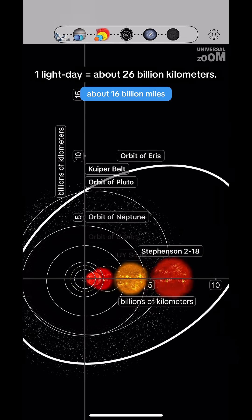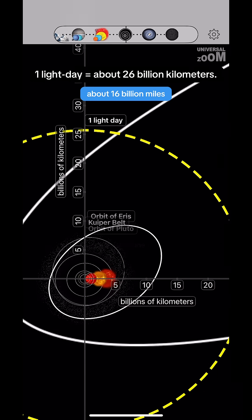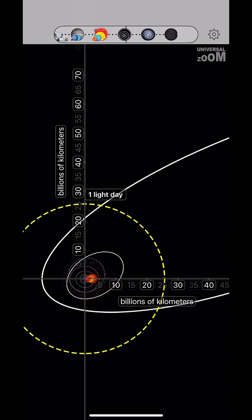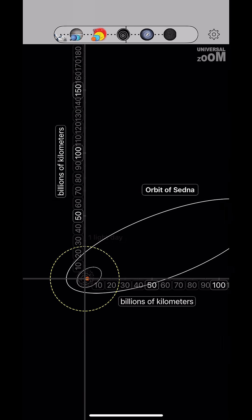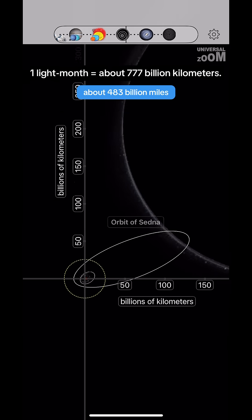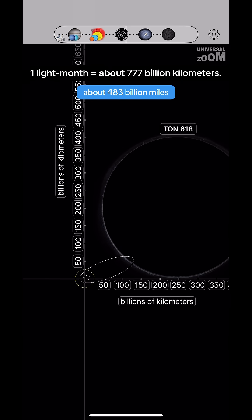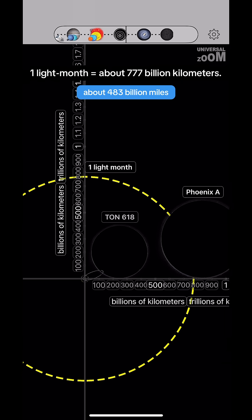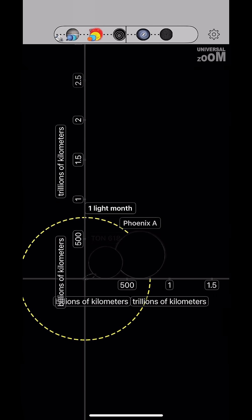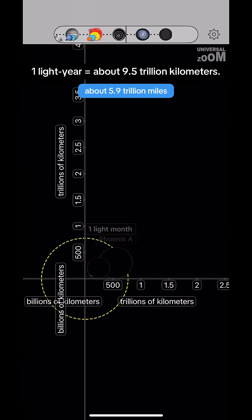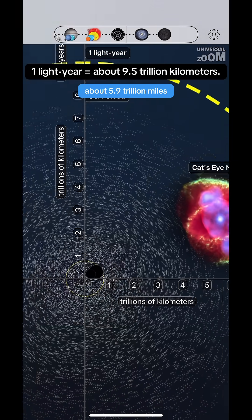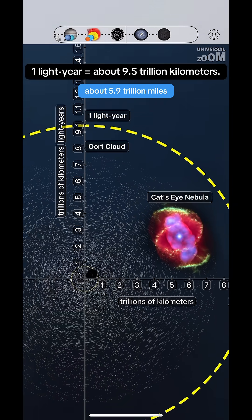One light day equals about 26 billion kilometers. One light month equals about 777 billion kilometers. One light year equals about 9.5 trillion kilometers.